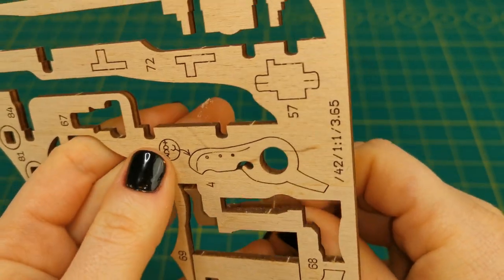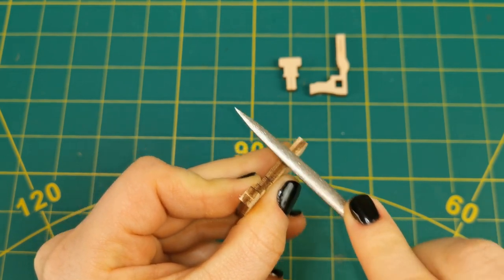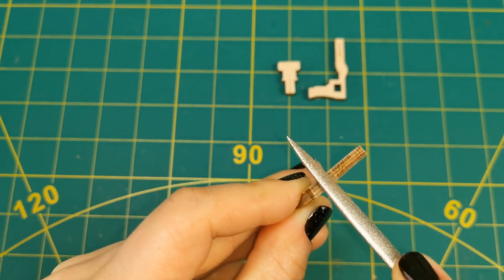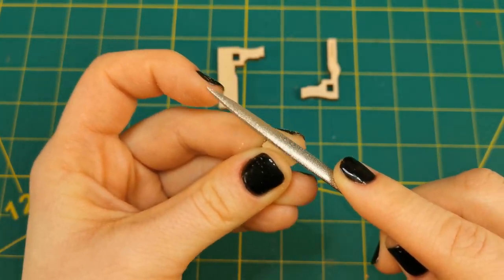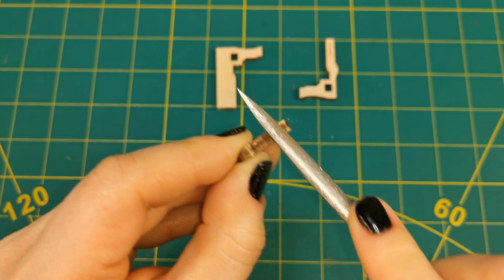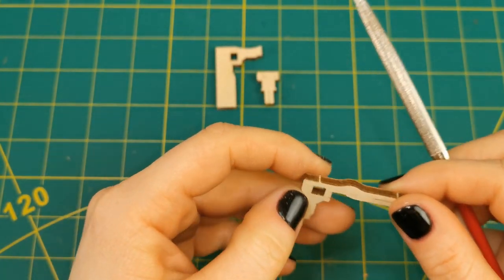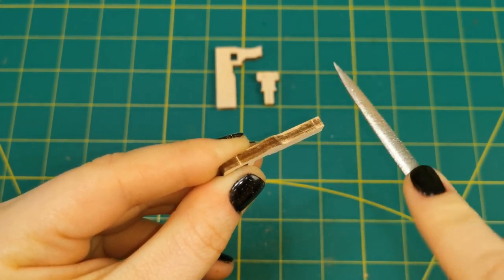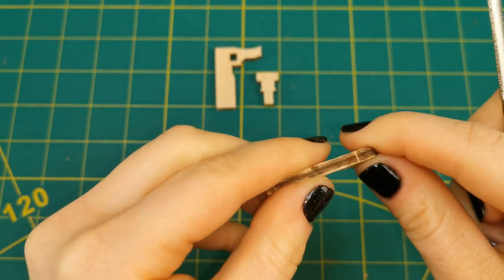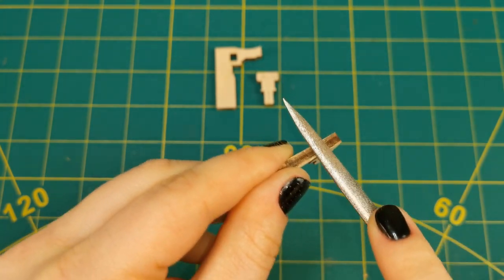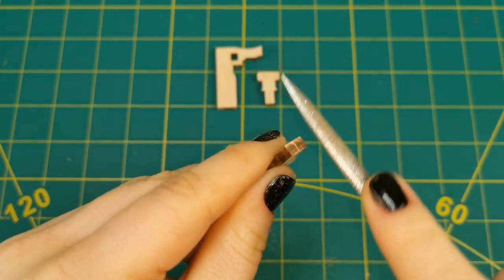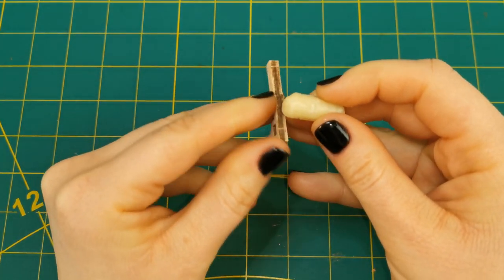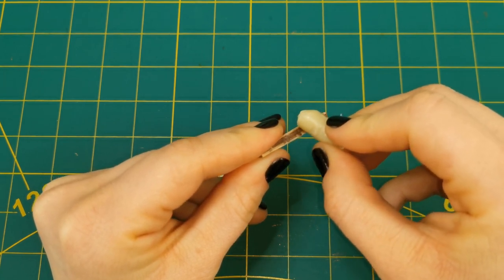I will recreate the lock using the spare parts, but first I need to smoothen the edges using a small file. The sliding lock rubs against other pieces, so applying wax will reduce the friction.